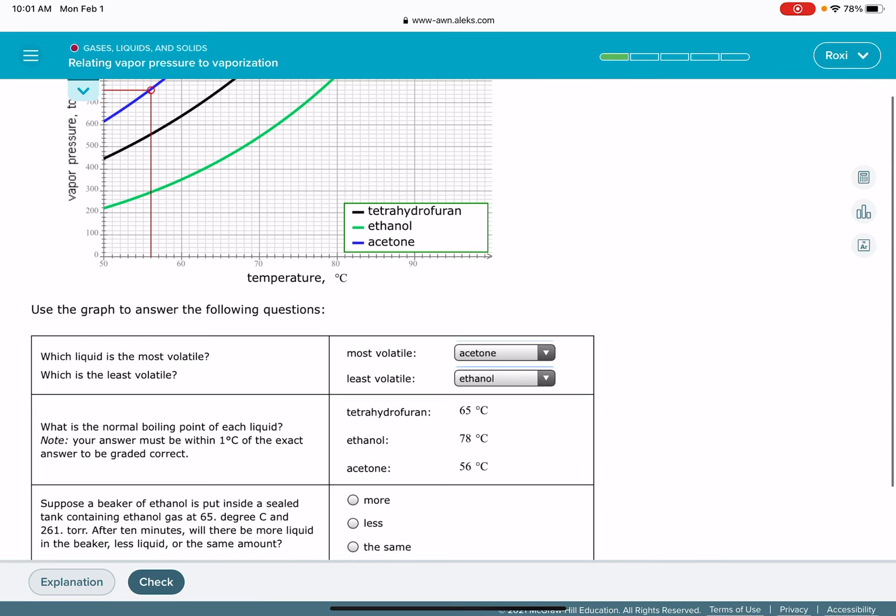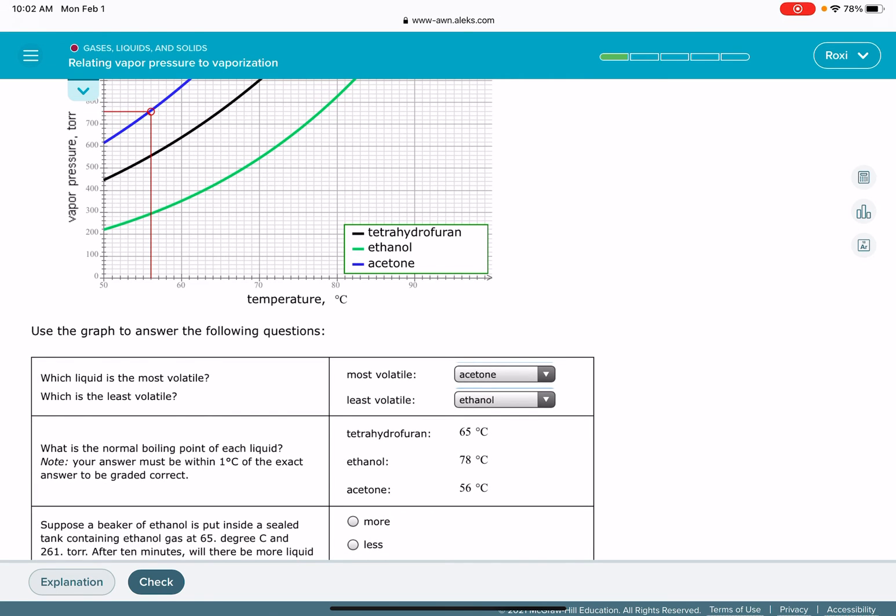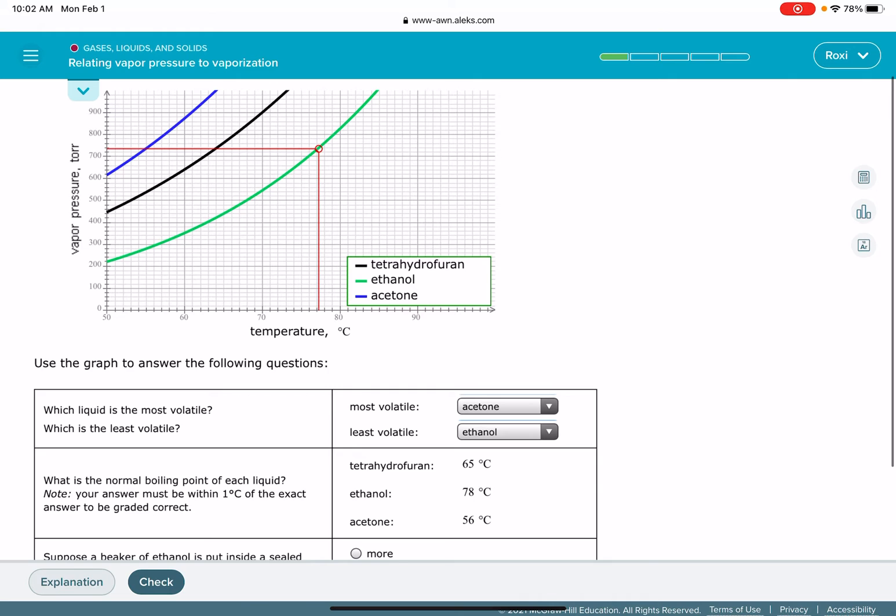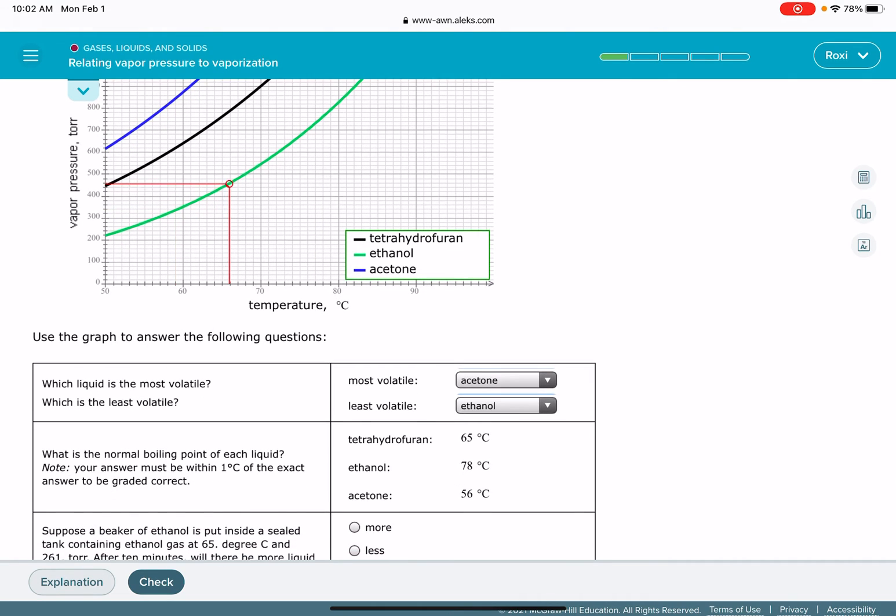The last question is going to give you a scenario, a pressure temperature combination, and it's going to ask you about evaporation of a substance or condensation of a substance. So the first thing that you want to do in this problem, it says ethanol, we're working with ethanol, make sure you're working with the correct line on your graph. Ethanol is my green line, so I'm going to stick with the green line for this problem.